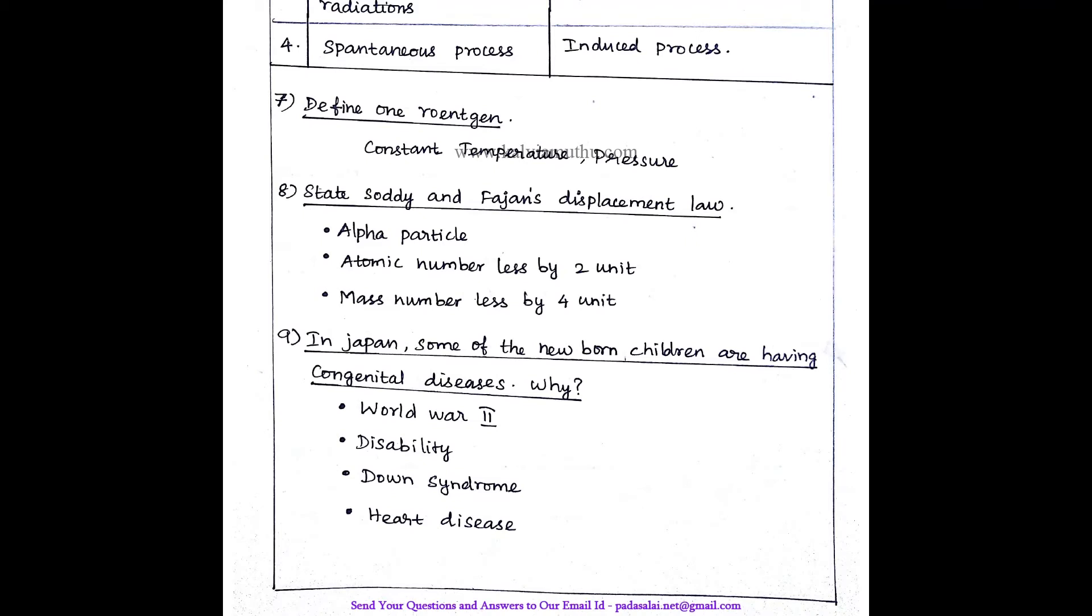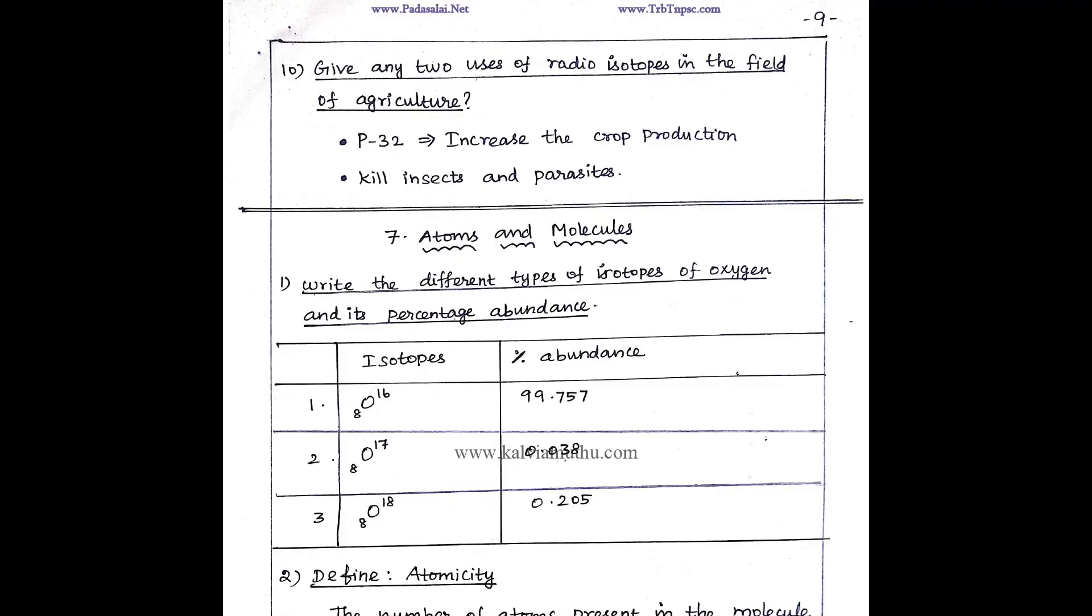In Japan, some of the newborn children are having congenital diseases. Why? Obviously, World War II nuclear. This is the main reason. Disability, Down syndrome, heart disease. This is the main reason. So nuclear is very careful.